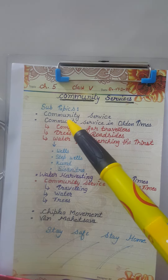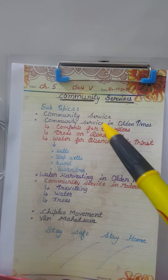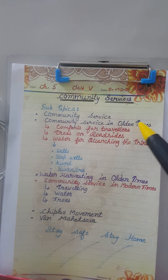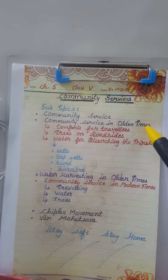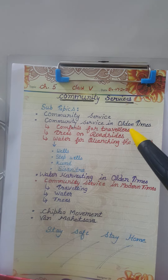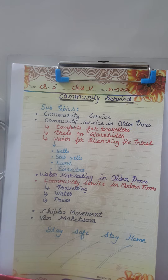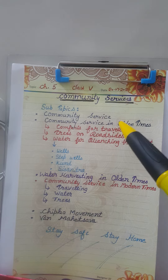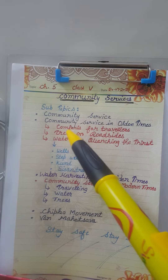Here are the sub-topics. First is community service in olden times. Olden time me community service kaise help karti thi? Help the poor with money, food, clothes, shelter, and look after the sick.